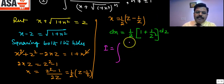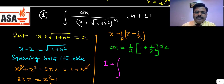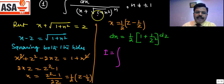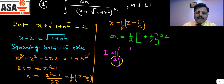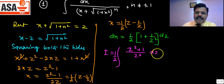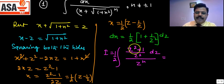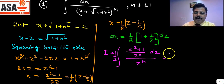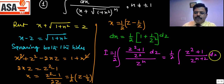Now the integration becomes: substitute dx with (1/2)(1 + 1/z²)dz, and the denominator (x + √(1+x²))^n becomes z^n. So the integral is (1/2) times (z² + 1)/z² divided by z^n, which gives (1/2) times (z² + 1) / z^(n+2) dz.